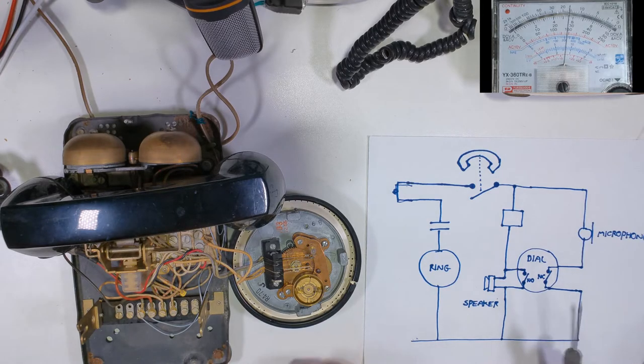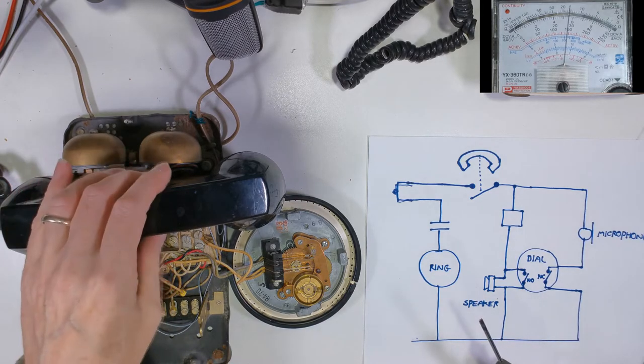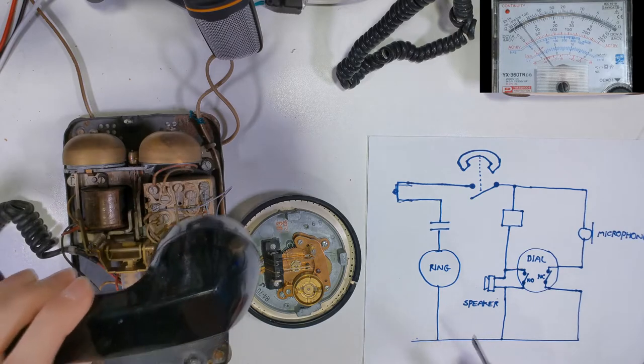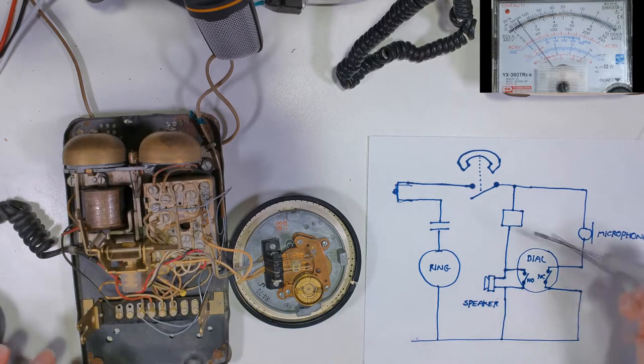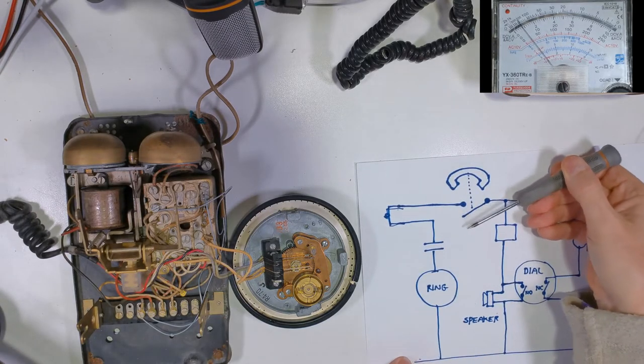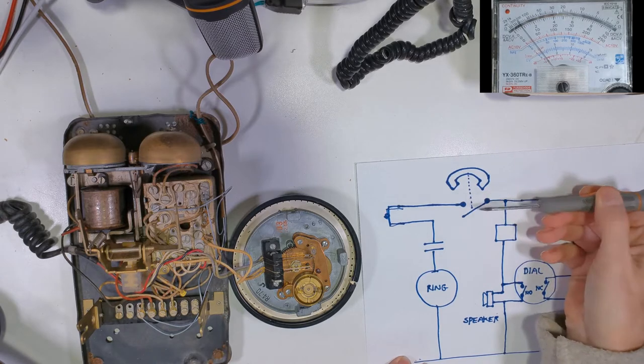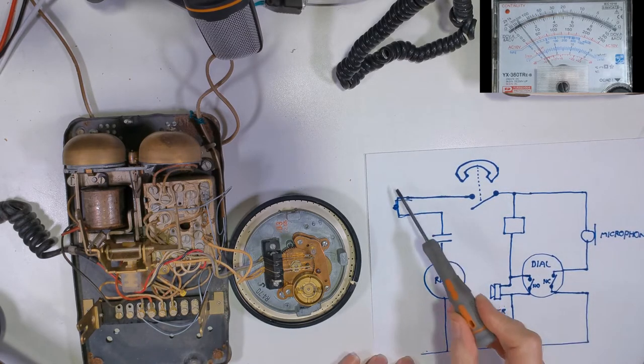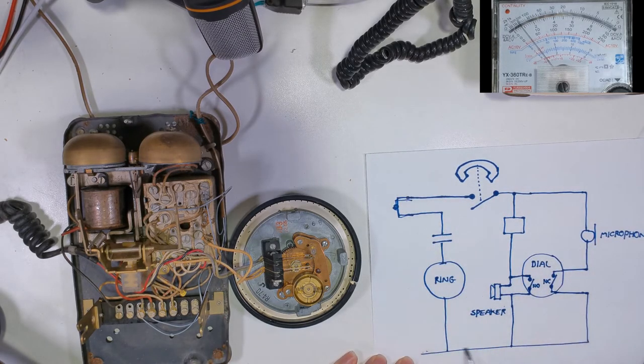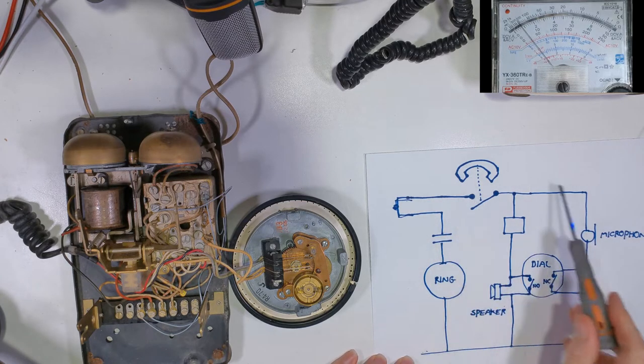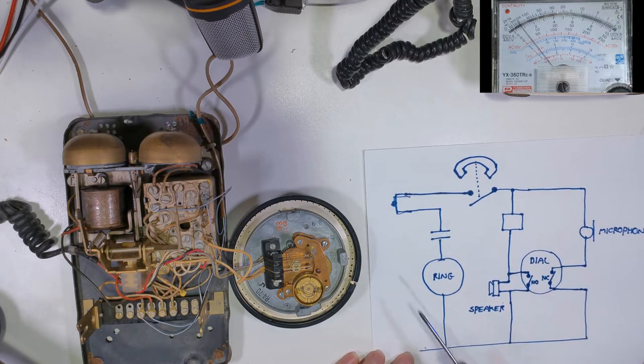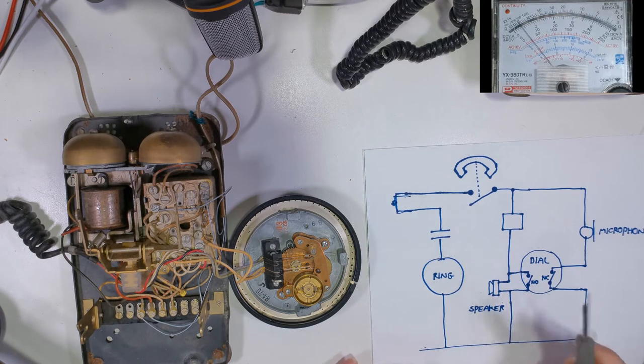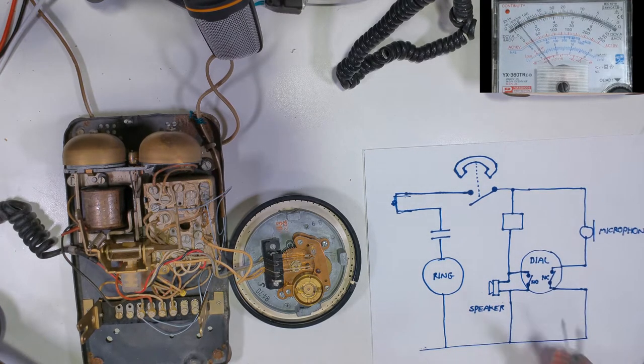When we lift the handset up you can see the voltage drops. The reason for this is that this switch here on the handset springs back and makes a connection so now the voltage goes through the phone. And because the phone is drawing current from the exchange, the voltage drops. So when the exchange sees this voltage drop it knows that the handset has been picked up and it's now ready to make a call.